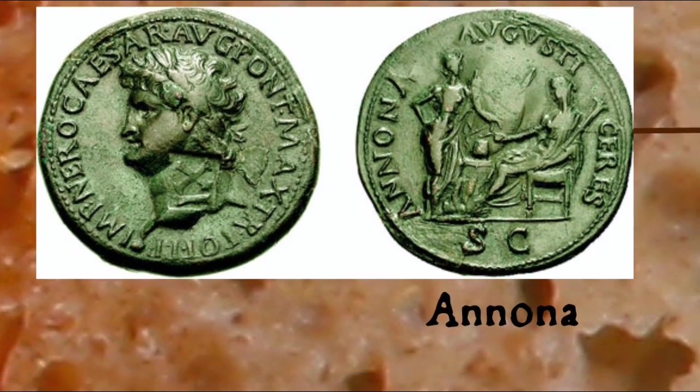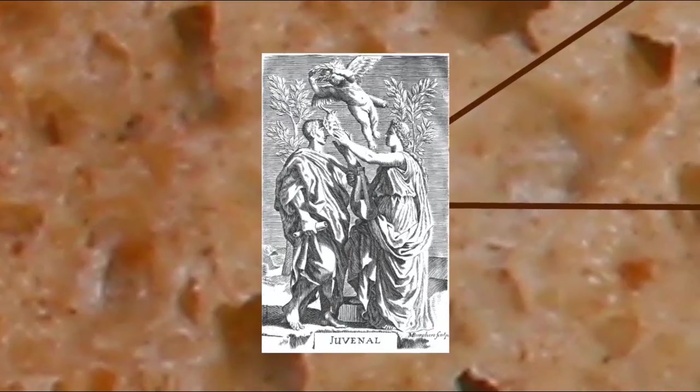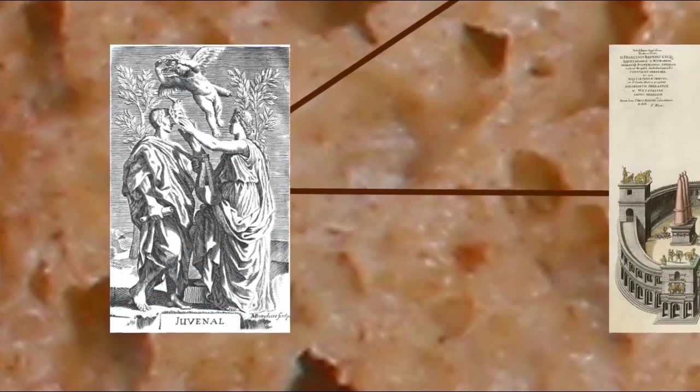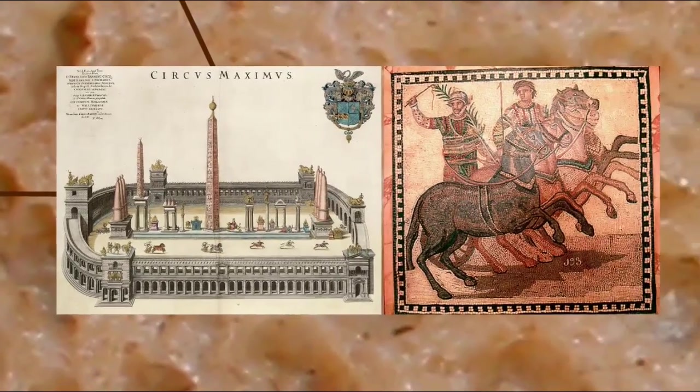The Roman satirist Juvenal criticizes the easily-distracted Roman populace by saying that they can be bought off by politicians with bread and circuses.